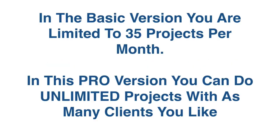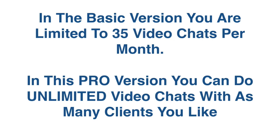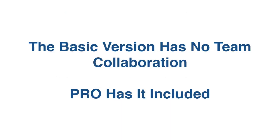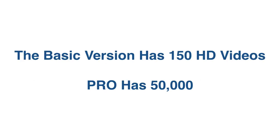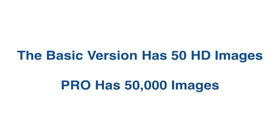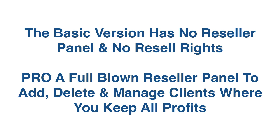Now let's look at this real quick. In the basic version, you are limited to just 35 projects per month. In this pro version, you can do unlimited projects with as many clients as you like. The basic version is also limited to 35 video chats per month — with pro, you can do unlimited live video chats. The basic version has no team collaboration feature; the pro version has it included. The basic version has no client export feature; pro comes with that included as well. In the basic app, you only get 150 HD videos — pro has 50,000. The basic version has only 50 HD images — with pro, you get 50,000 images. And the basic version has no reseller panel and no resell rights. With pro, a full-blown reseller panel is included where you can add, delete and manage clients and keep all the profits.